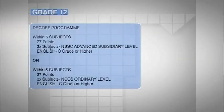The 27-point minimum on the UNAM scale should be obtained in five subjects, two of which should be at Namibia Senior Secondary Certificate Advanced Subsidiary Level with a C grade or higher in English, or 27 points in five subjects of which three should be at Namibia Senior Secondary Certificate Ordinary Level with a C or higher grade in English. All this is for a degree program.